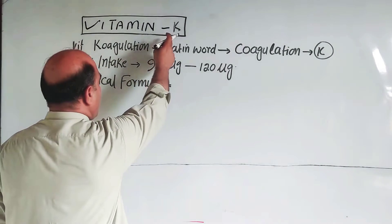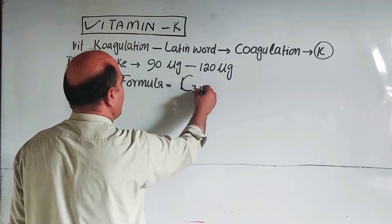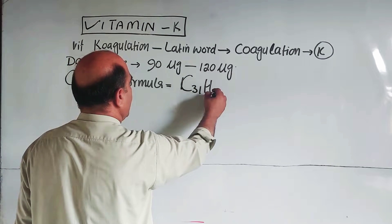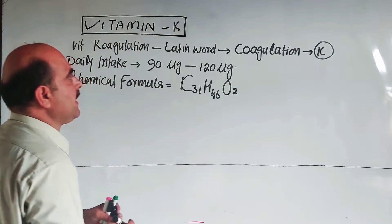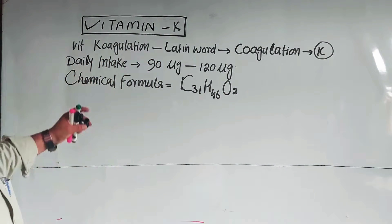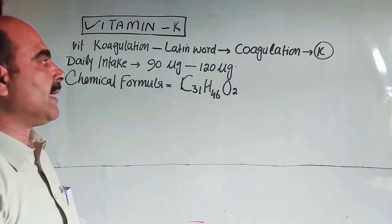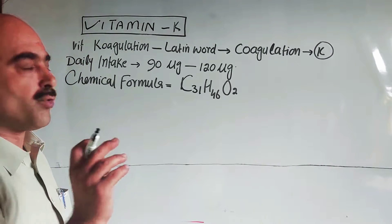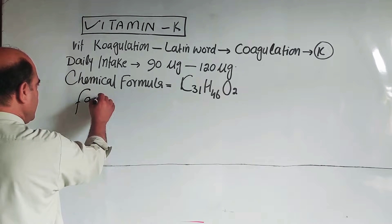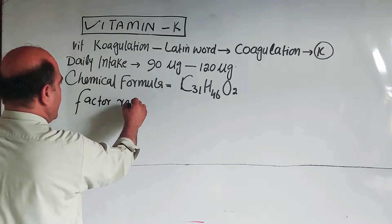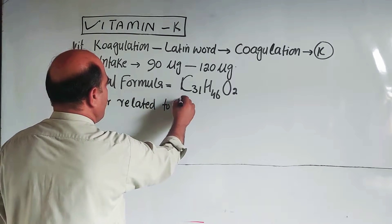The chemical formula of Vitamin K is C31H46O2. This is a very critical formula to remember. Vitamin K is related to blood clotting — it is a factor related to blood clotting.